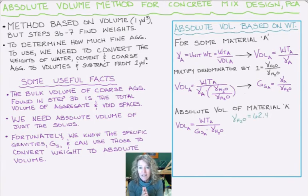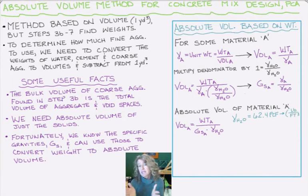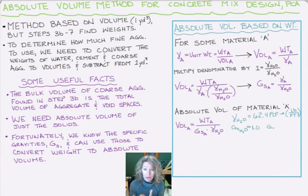The unit weight of water is 62.4 pounds per cubic foot, typically written as PCF. And the specific gravity of water is just the unit weight of water over the unit weight of water, so that's one. And for cement, it's 3.15.